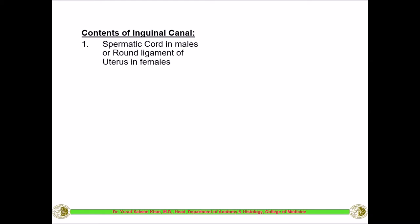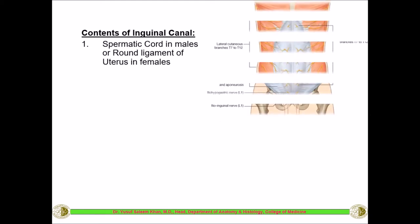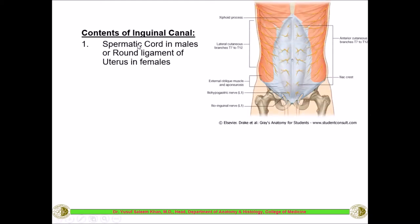Before discussing inguinal hernia, we should know the contents of this inguinal canal and why it is so important. This canal is important because it gives passage for a very important structure in the male — the spermatic cord — through which sperms are drained from the testes into the external world. You can see the spermatic cord coming through the deep inguinal ring, out through the superficial inguinal ring, and descending into the scrotum.